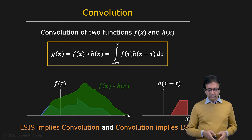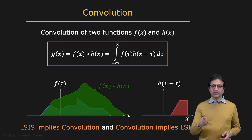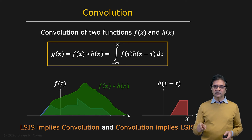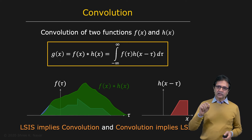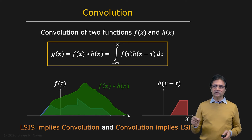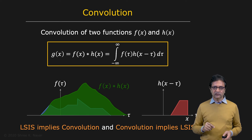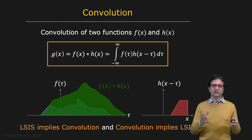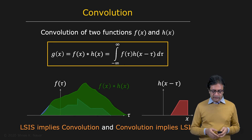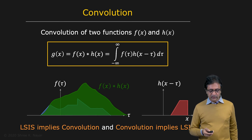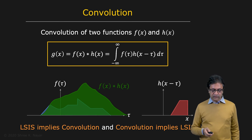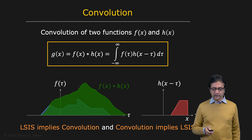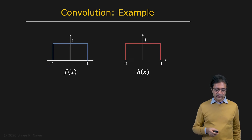So now I want to point out — and we'll come back to this later — that any linear shift invariant system is performing a convolution. And whenever you're doing a convolution, that means what you have is a linear shift invariant system. We'll show this very soon, but first let's take a look at a couple of very simple examples.